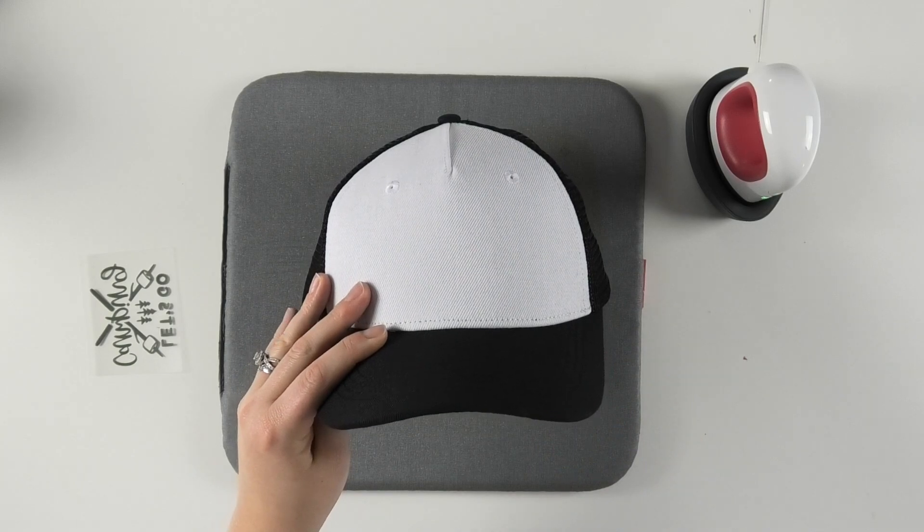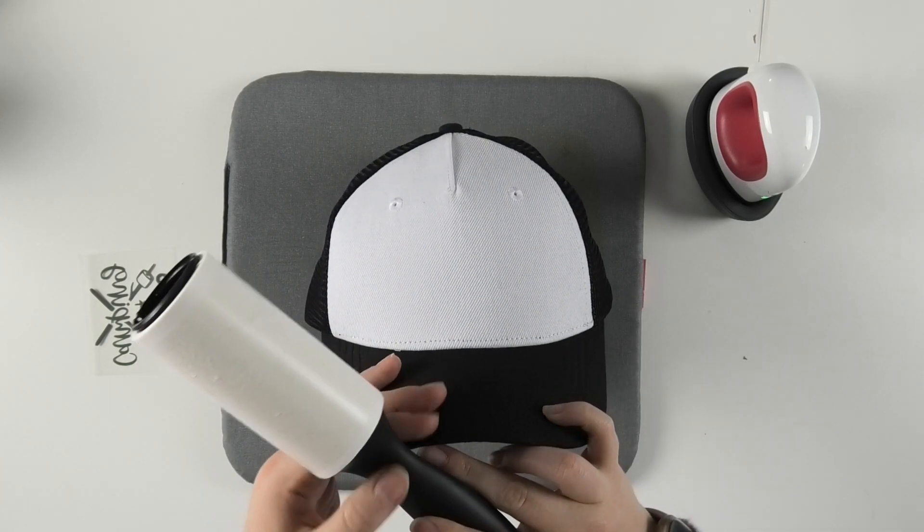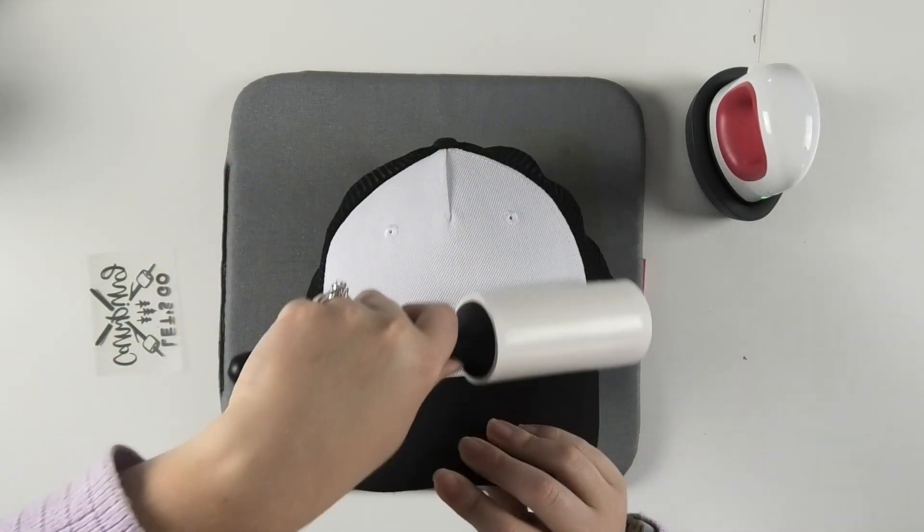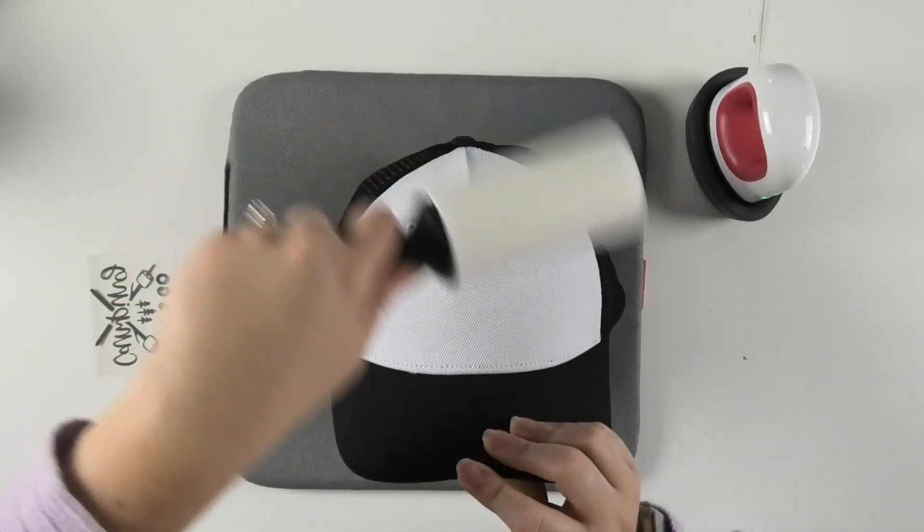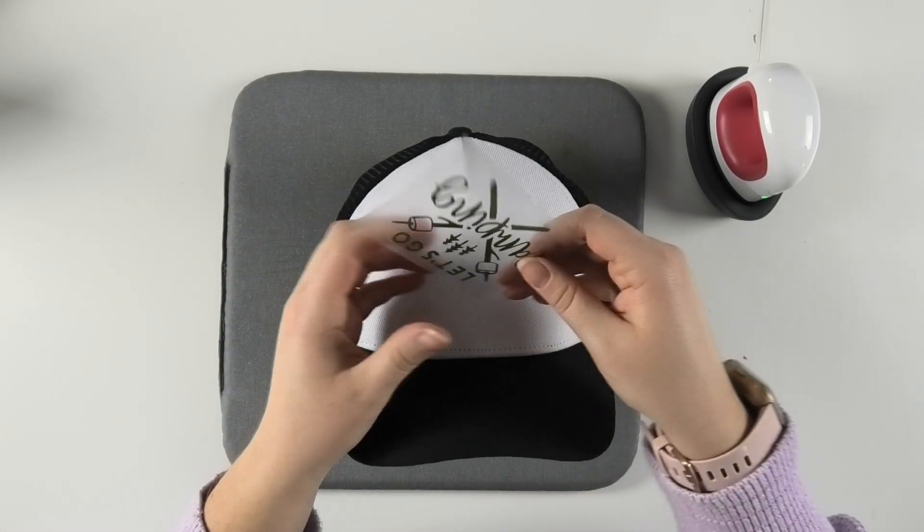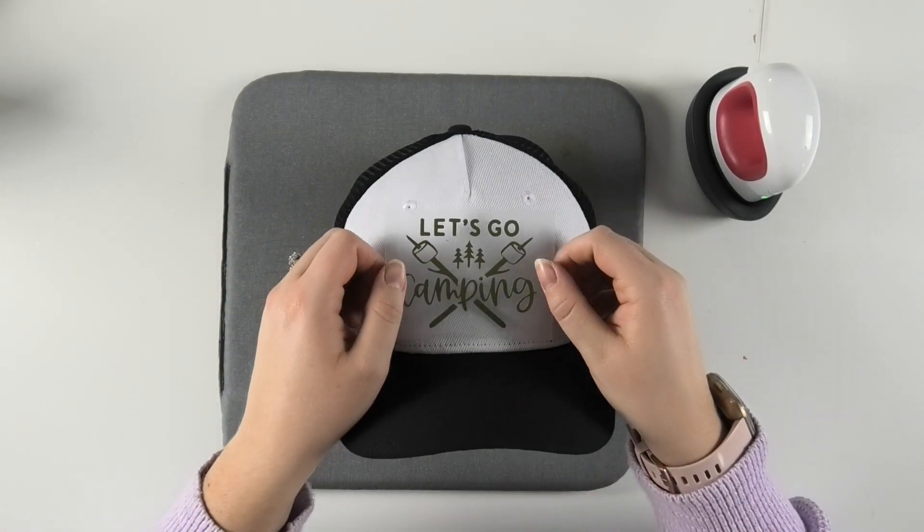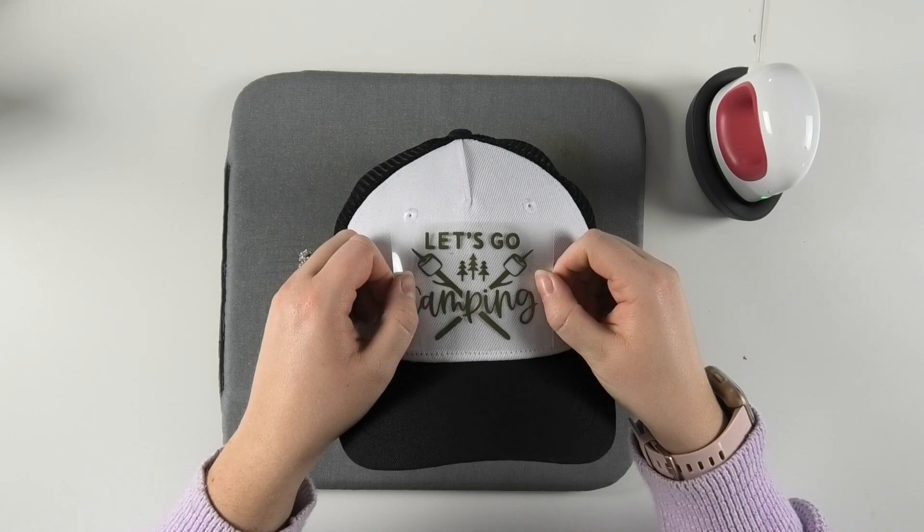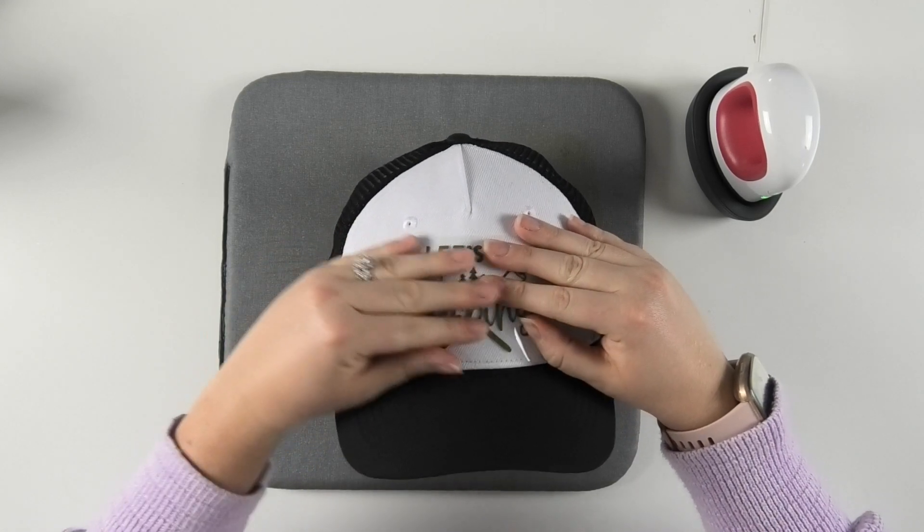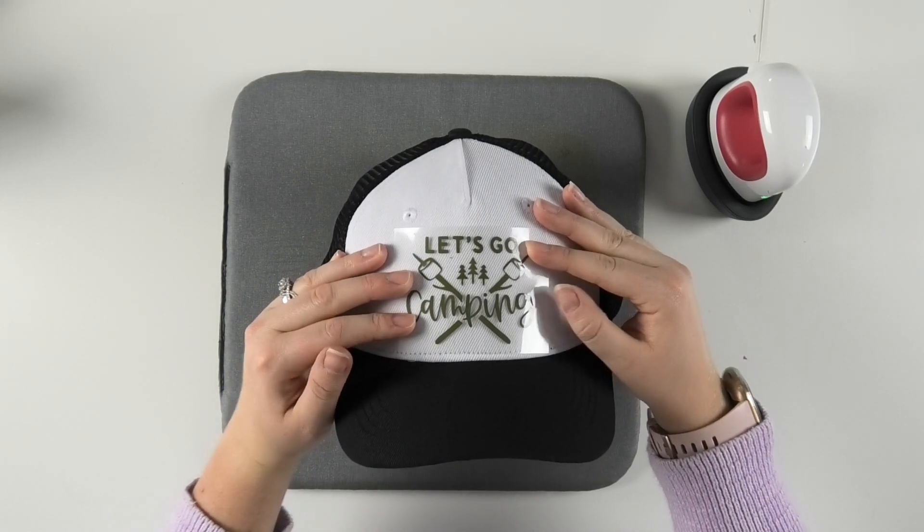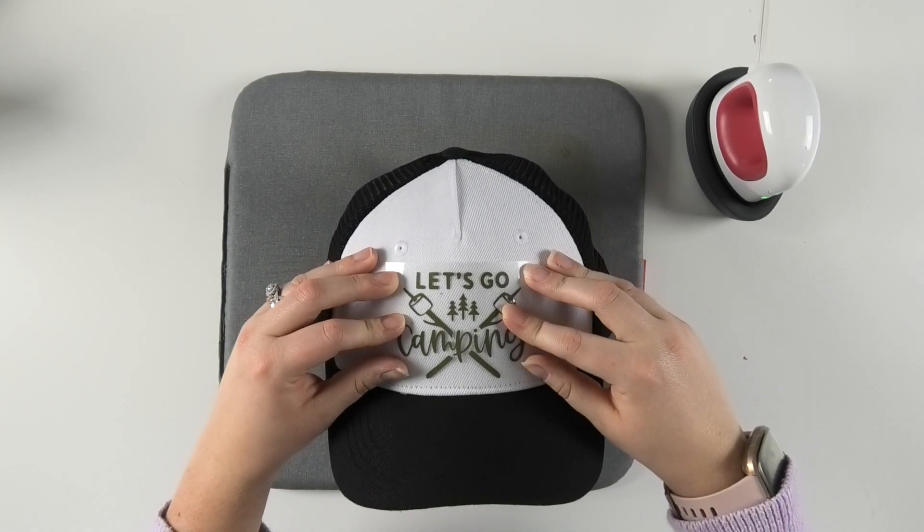Then I'm going to stick my HTV decal onto my hat. I cut some olive Starcraft Softlex for this project, but you can use pretty much any kind of HTV that you have on hand, which is what's so great about this project.